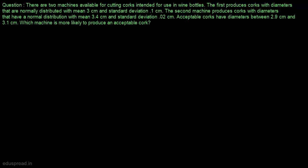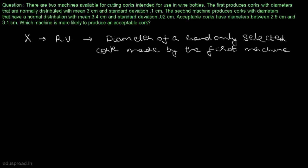Let's define some random variables. Let x be a random variable that denotes the diameter of a randomly selected cog made by the first machine. We are given that x is normally distributed with mean mu x equal to 3 cm and standard deviation sigma x equal to 0.1 cm.